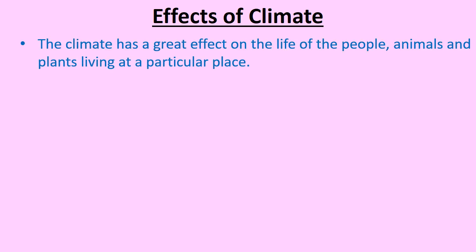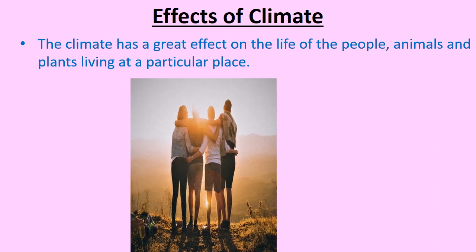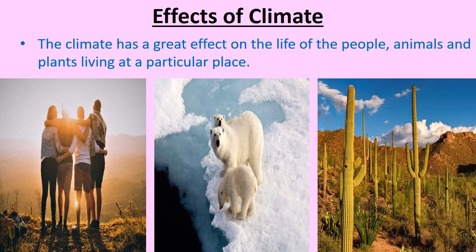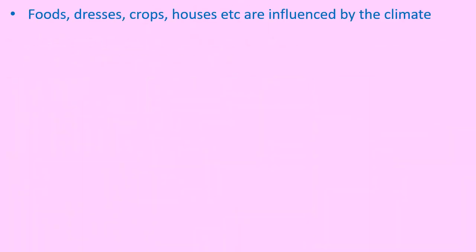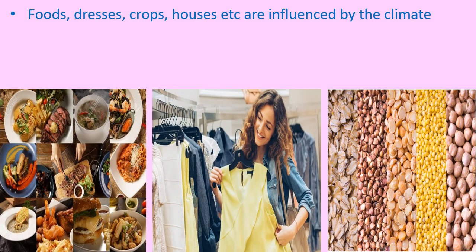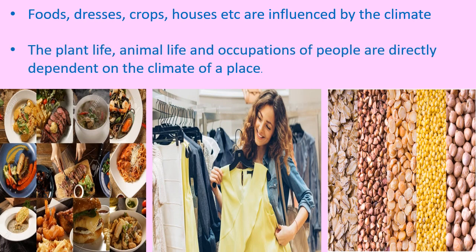Climate has a great effect on the life of people, animals, and plants living at a particular place. Food, dresses, crops, houses, and other aspects of life are influenced by the climate. The plant life, animal life, and occupations of people are directly dependent on the climate of a place.